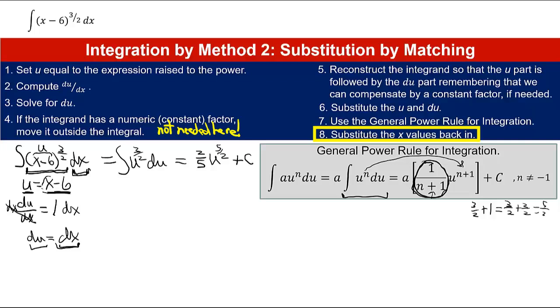So now you've got to go back and say, well, u is really x minus 6, so I end up with 2/5 times x minus 6 quantity to the 5/2 power plus c. And there you go.